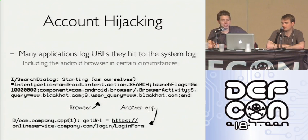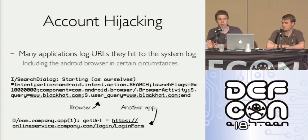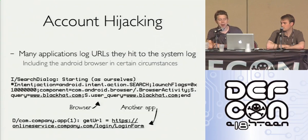The background on this is that a lot of applications log URLs with varying levels of parameterization to the system logs. For example, the top log statement you see is what the Android browser does when you type in a URL — you can effectively see what query was put in there. The second example is what the vulnerable app we found in the wild was actually doing: it was effectively logging any URL it retrieved.